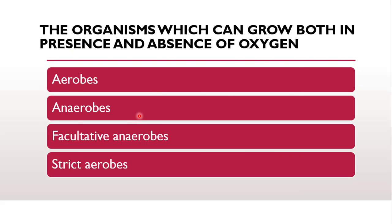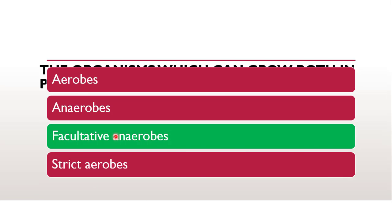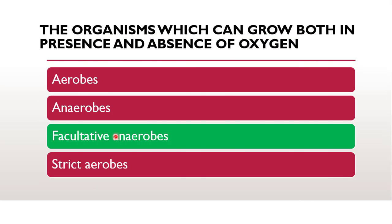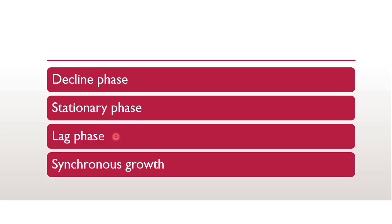Next question: organisms which can grow both in presence and absence of oxygen are aerobes? No, because they grow only in presence of oxygen. Anaerobes? No, because they grow only in absence of oxygen. The correct answer is facultative anaerobes, which can grow both in presence as well as absence of oxygen.